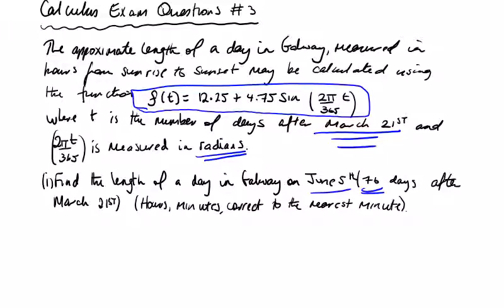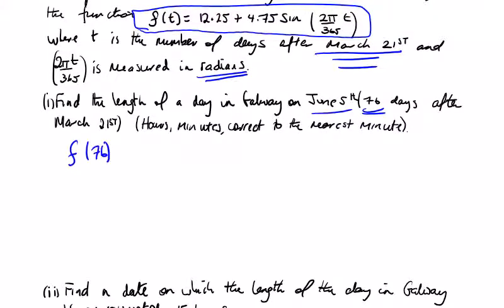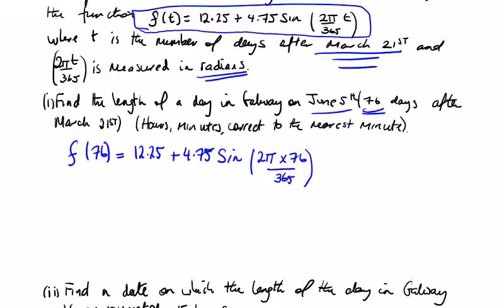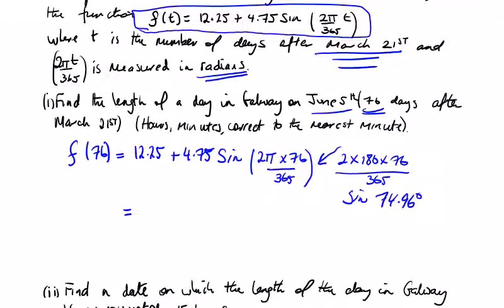Find the length of the day in Galway on June 5th — 76 days after March 21st — so we need f(76). Using the calculator: f(76) = 12.25 + 4.75 × sin(2π × 76/365). Converting to degree form gives sin of approximately 74.96°, so times 4.75 plus 12.25 gives 16.837.